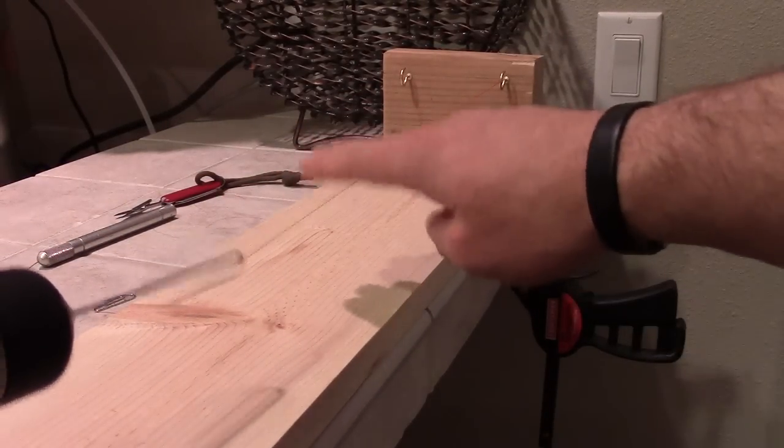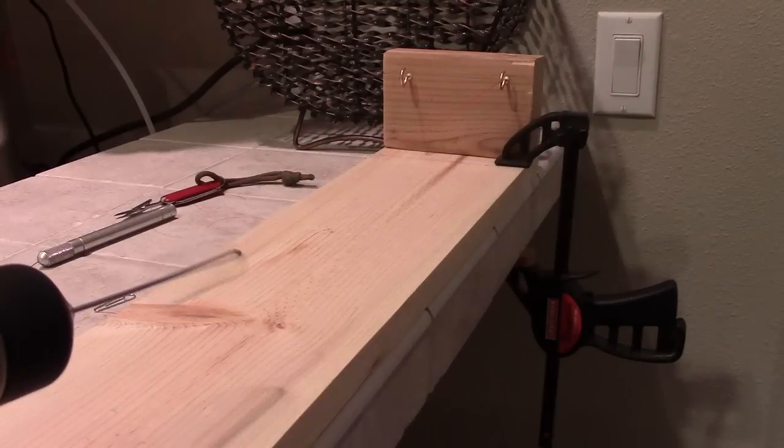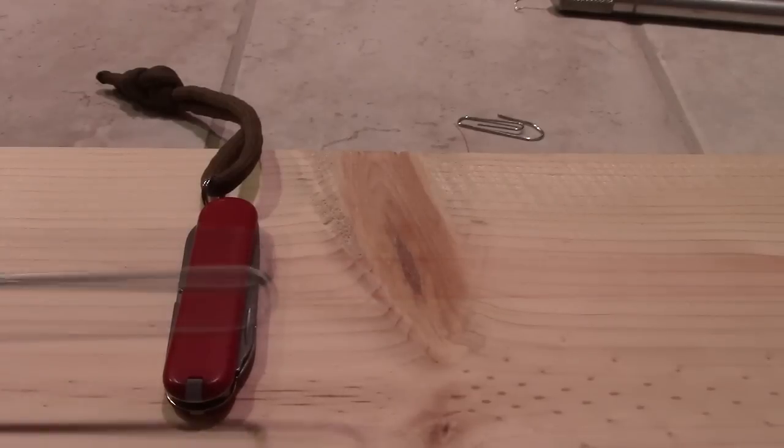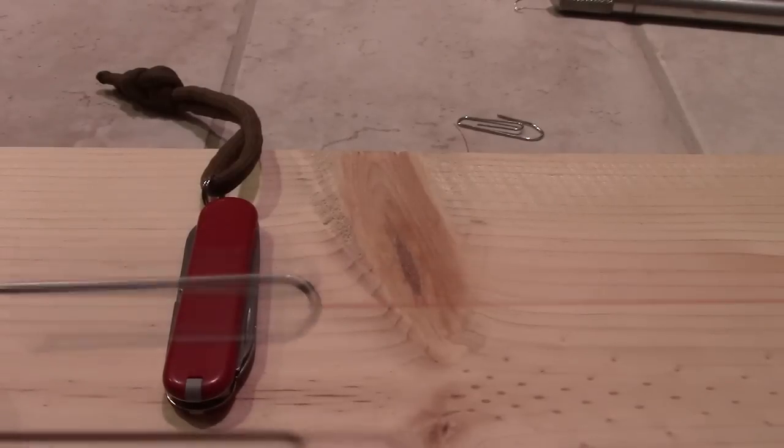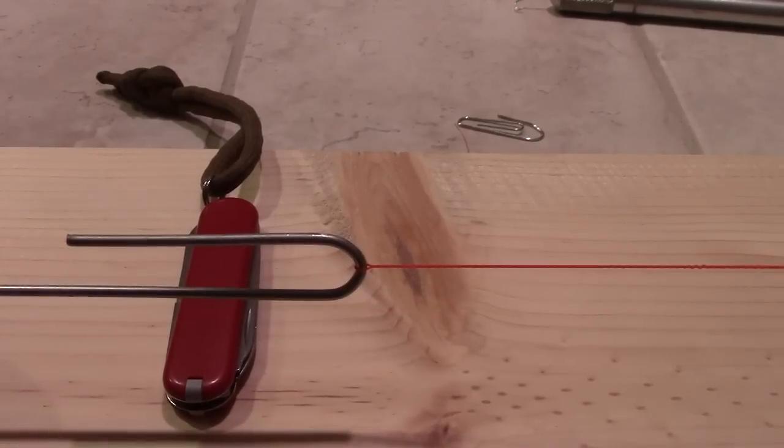Now we're simply going to spin the drill counterclockwise until we begin to see it furl again. The reason we make our original leg 10 to 20 percent longer is because in this step, the leader is actually going to shorten.